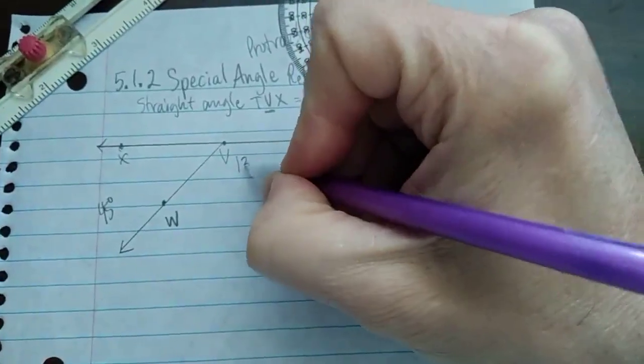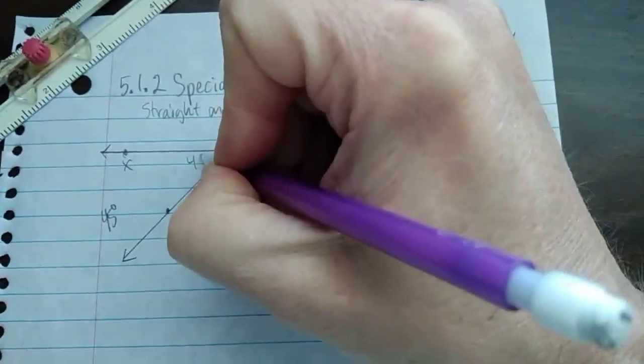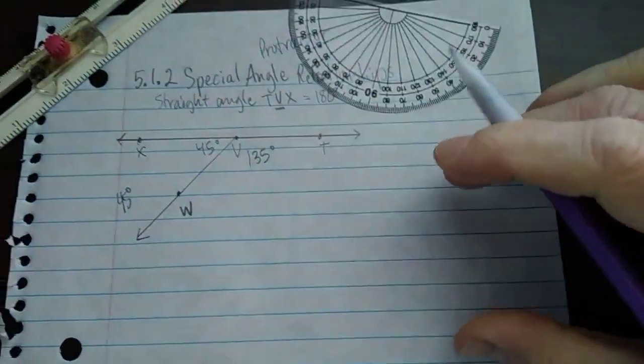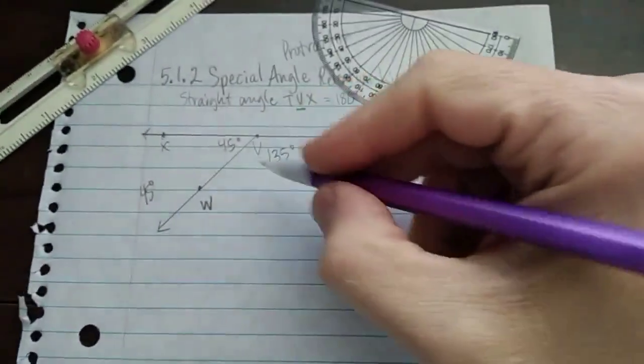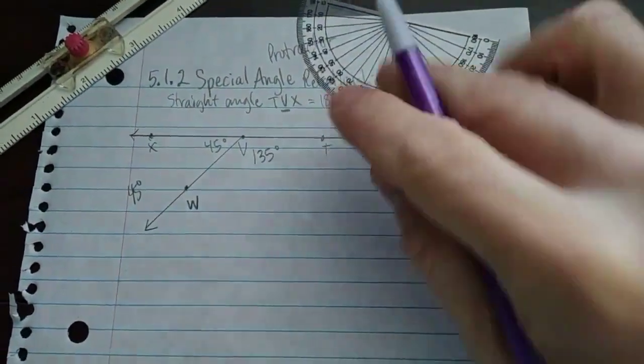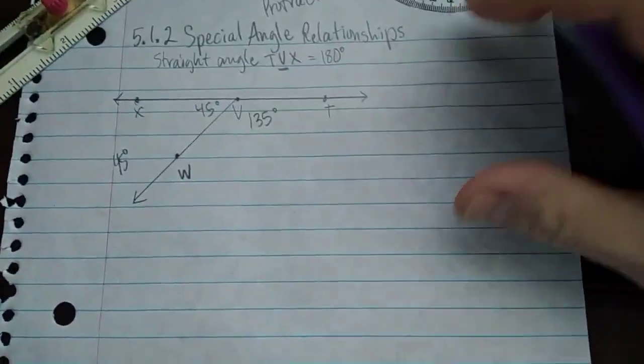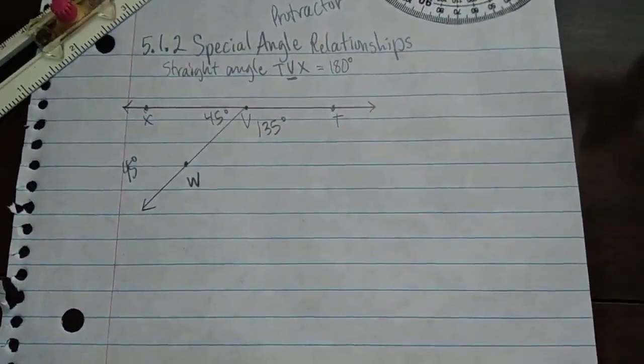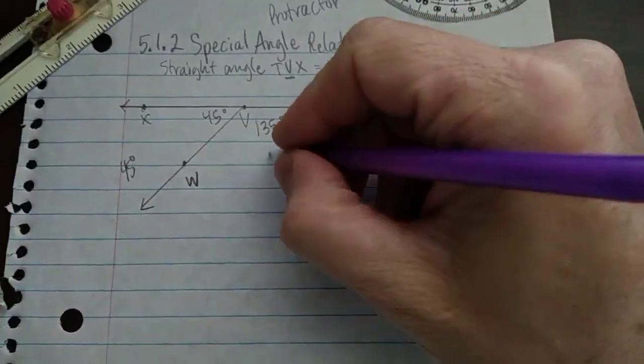So usually I label them in here, 135 degrees and 45 degrees. Now the question is, if I add up 45 and 135, does that equal 180? And it better, otherwise I've done a wrong calculation. And the answer is, yes it does.